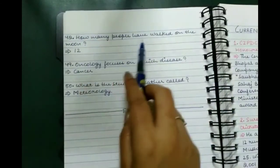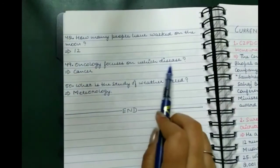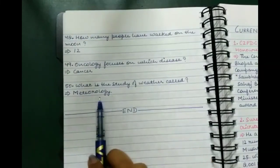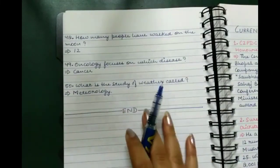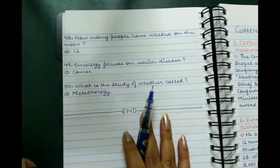How many people have walked on the moon? 12. Oncology focuses on which disease? Cancer. What is the study of weather called? Meteorology. Guys, here 50 questions is this video's part, and the next 50 questions will be coming in the next video.